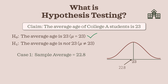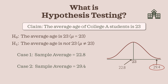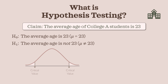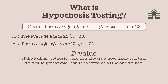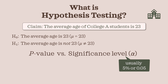You will likely not reject the null hypothesis in that case. But if our sample average is 29.4, which is quite far off, we'll think: how can the entire college's average be 23 when our representative sample is this far away? In hypothesis testing, we usually don't draw conclusions based simply on the sample average. We set up a cut-off value called a critical value, or use a measure called the p-value. The p-value tells us: if the null hypothesis were actually true, how likely is it that we would get a sample result as extreme as the one we got? We compare this probability to a significance level, usually 5% or 0.05, which is our cut-off for what we consider too unlikely.